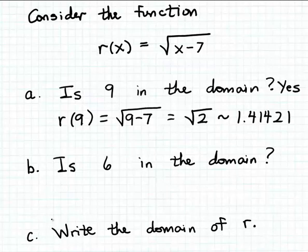So we're going to go through exactly the same steps. We're just going to evaluate r of 6 and see what sort of output value that we get. All right, so r of 6 is going to be the square root of 6 minus 7.